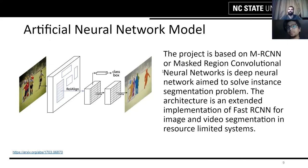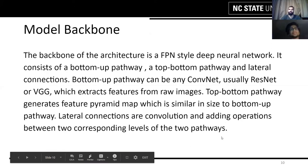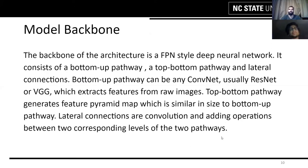Our Mask RCNN model is a Mask Region Convolutional Neural Network which solves the instance segmentation problem. It is an extension of Faster RCNN, used for both image and video segmentation in resource-limited systems. The model backbone is a Feature Pyramid Network style deep neural network, consisting of a bottom-up pathway, a top-down pathway, and lateral connections. The bottom-up pathway can be any convolution network such as ResNet or VGG, which extracts features from raw images. The top-down pathway generates the feature pyramid, which is similar in size to the bottom-up pathway.